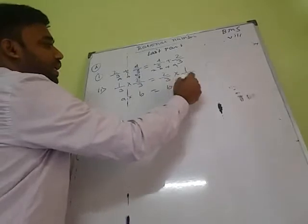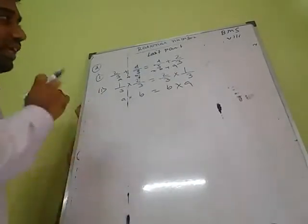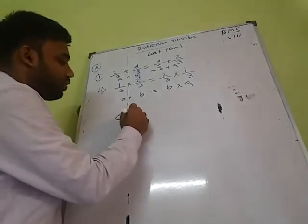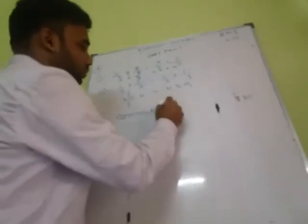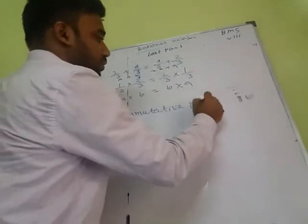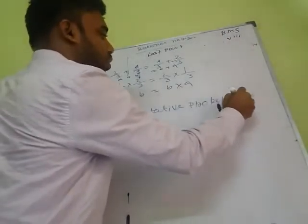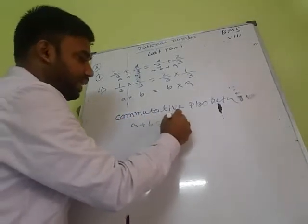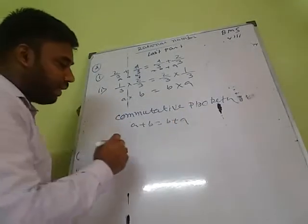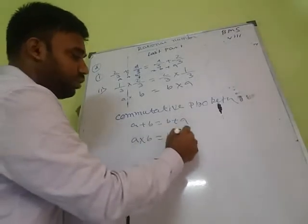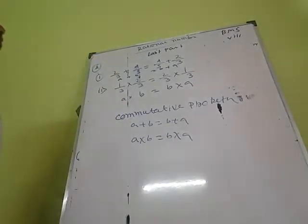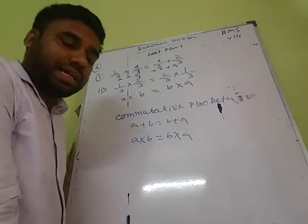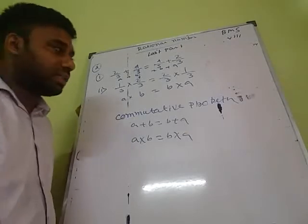The first expression A into B equals B into A illustrates the commutative property under multiplication. The second expression A plus B equals B plus A illustrates the commutative property under addition.